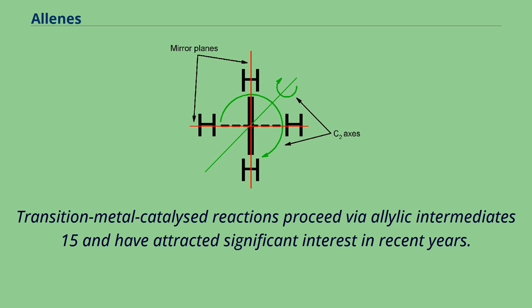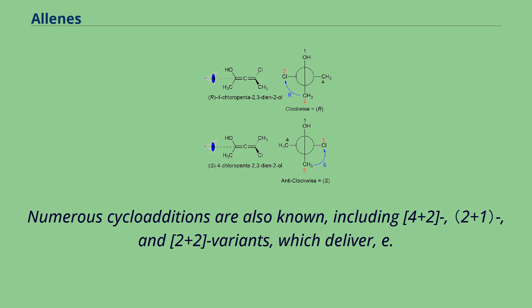Numerous cycloadditions are also known, including [4+2] and [2+2] variants, which deliver products 12, 14, and 16, respectively.